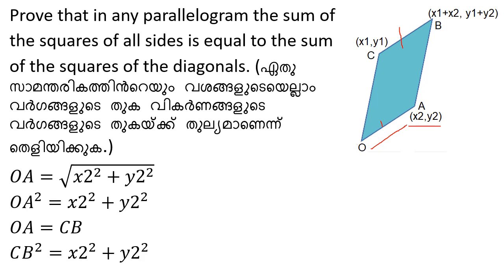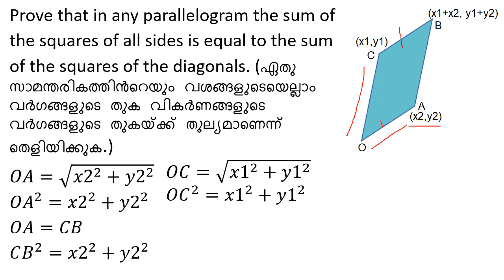CB squared is equal to x₂ squared plus y₂ squared. Now we call the same thing for OC: OC equals the root of x₁ squared plus y₁ squared. OC squared is equal to x₁ squared plus y₁ squared. AB squared is also x₁ squared plus y₁ squared. So the two sides are x₁ squared plus y₁ squared and the other side is x₂ squared plus y₂ squared.